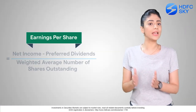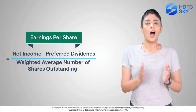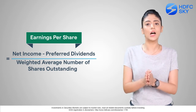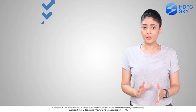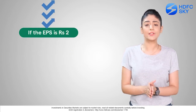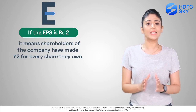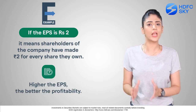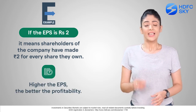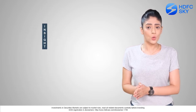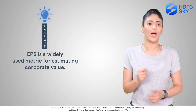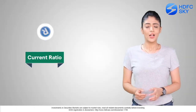Number four: Earnings Per Share, yani EPS. Earnings Per Share means how much earning the company made per stock. For example, if the EPS is 2 rupees, it means shareholders have made 2 rupees for every share they own. EPS is used with other ratios such as PE to estimate a company's intrinsic value.